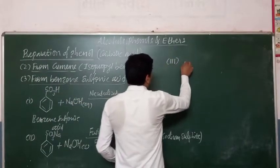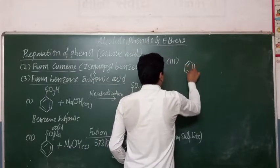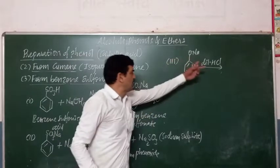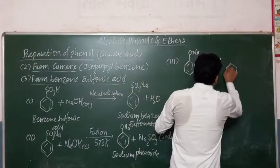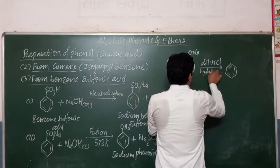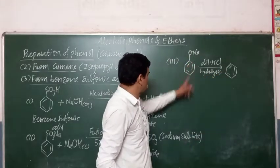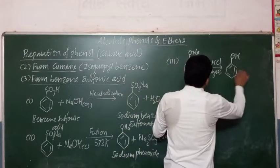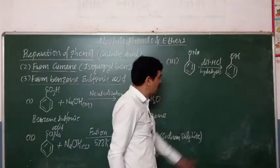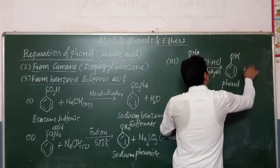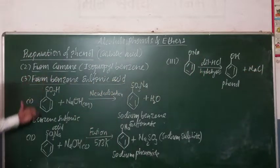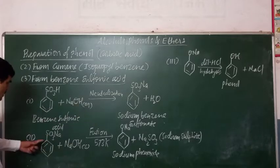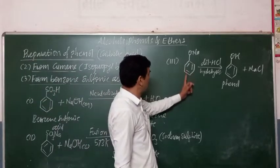In the third stage, this sodium phenoxide is hydrolyzed by dilute acid such as dilute HCl. Hydrolysis — the breakdown of sodium phenoxide by dilute HCl — gives the formation of phenol, and NaCl is separated. So in this way, there are three steps for the preparation of phenol from benzene sulfonic acid: neutralization, fusion of sodium benzene sulfonate with solid NaOH, and hydrolysis of sodium phenoxide to give phenol.